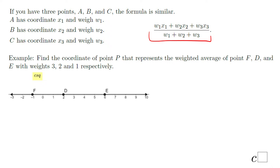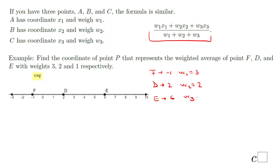Find the coordinate of point P that represents the weighted average of points F, D, and E, with weights 3, 2, and 1, respectively. Point F is located at negative 1 and the weight of that point is 3. Point D is located at 2 and has a weight of 2. And point E is located at 6 and has a weight of 1.